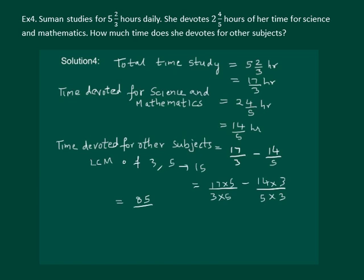Now we can solve this further and get 85 by 15 minus 42 by 15, which will give us 15 as denominator and 43 as the numerator.